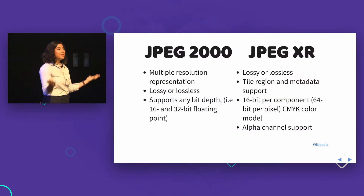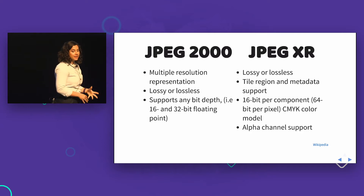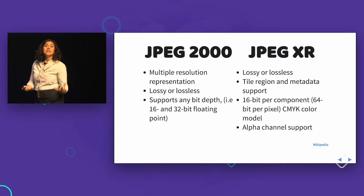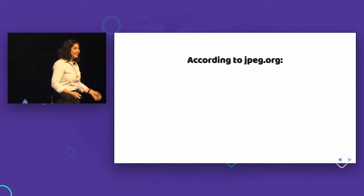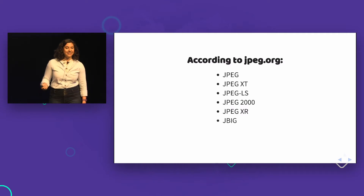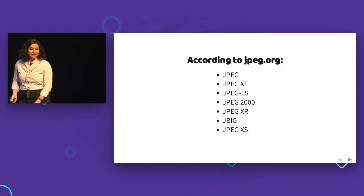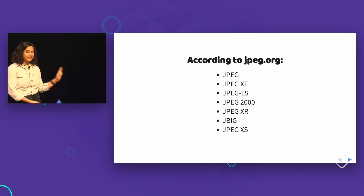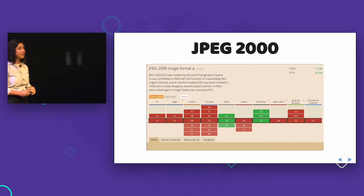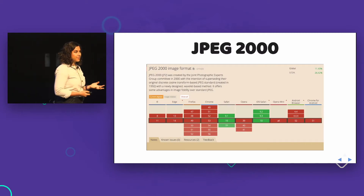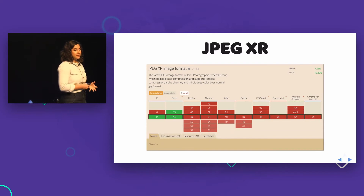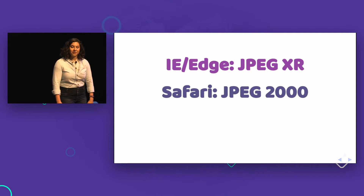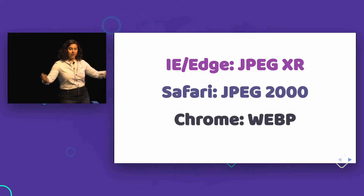There are many JPEG types. JPEG-2000 and JPEG-XR now have both lossless and lossy compression with revised algorithms. But JPEG-2000 is really only supported by Safari, and JPEG-XR is only supported by IE and Edge. So the advice is: for IE and Edge, use JPEG-XR; for Safari, use JPEG-2000; for Chrome, use WebP. Welcome to the web in 2016.